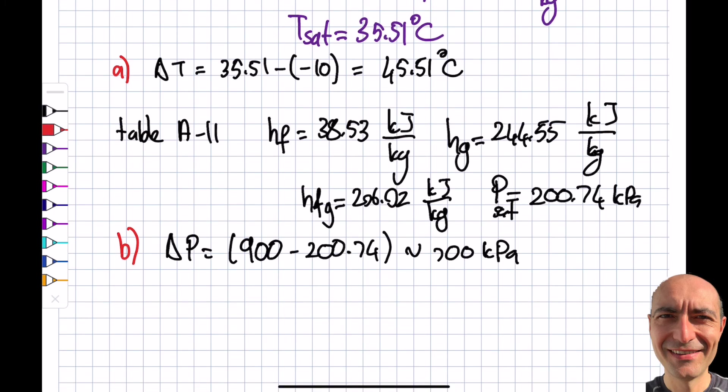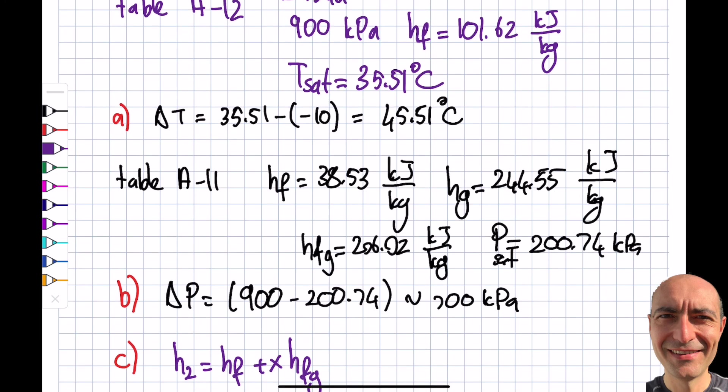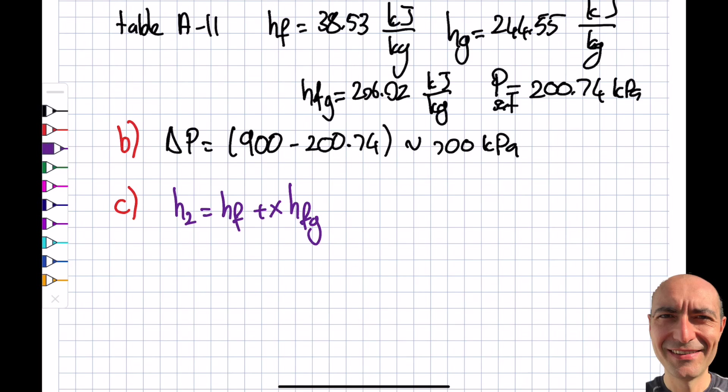Then I do part c, finding my x value. So my h₂ will be h_f + x·h_fg. You see that's why I need h_fg - if you didn't write it when you're looking at table A-11 you have to revisit it, but that's not a big deal. So from here you can see 101.62 kJ/kg will be equal to h_f which is 38.53 plus x times 206.02. And I get my x to be 0.306 for this particular case. All right, so that's gonna do it for the throttling process. Have a good day. Thanks.